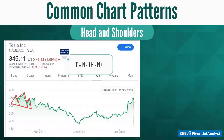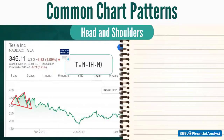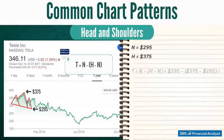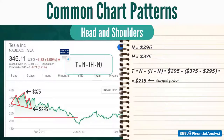So, in our situation, for a neckline of 295, we'll have the price target equals 295 minus the difference of 375 and 295. Therefore, we'll have a target price of 215. And a few months later, Tesla reached and even breached the 215 level.